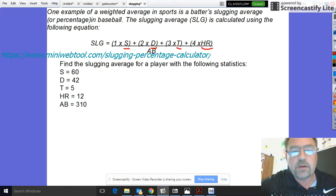They're all weighted: singles times 1, doubles times 2, triples times 3, and home runs by 4, and it's all divided by the at-bats. So basically just plug in the numbers into the formula.